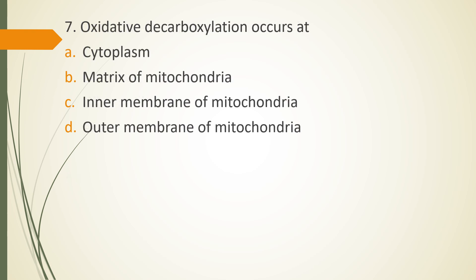Question 7. Oxidative decarboxylation occurs at. Option A. Cytoplasm. Option B. Matrix of mitochondria. Option C. Inner membrane of mitochondria or option D. Outer membrane of mitochondria. The correct answer is option B. That is matrix of mitochondria.